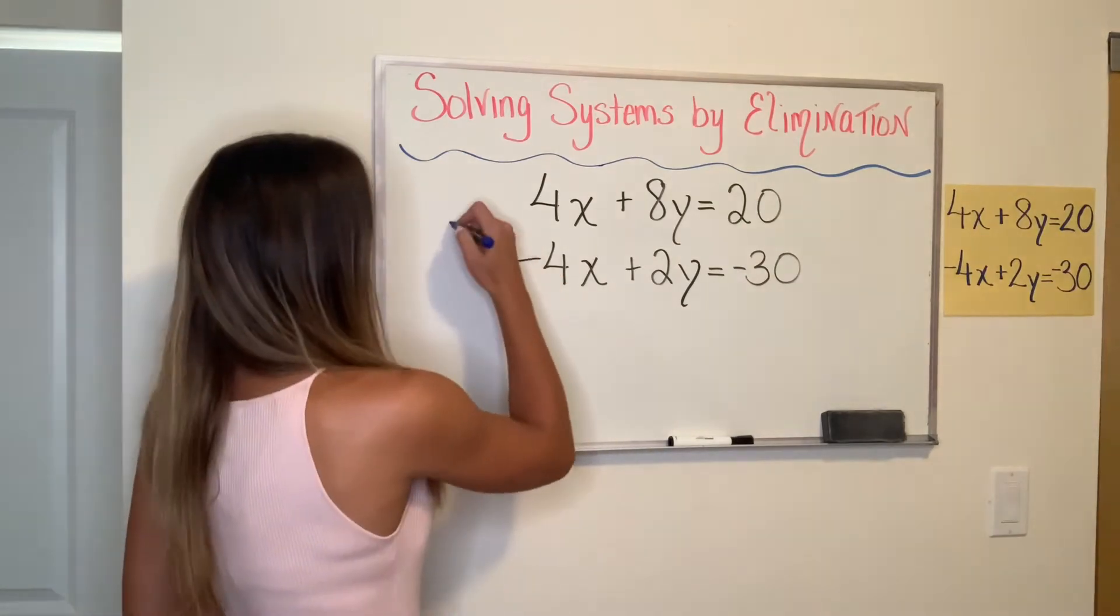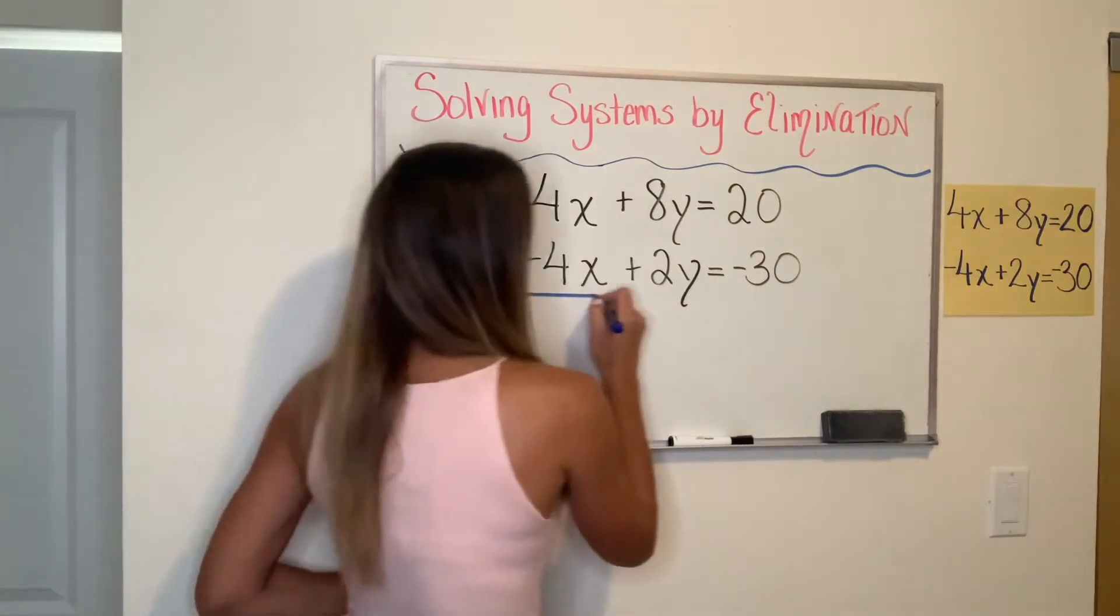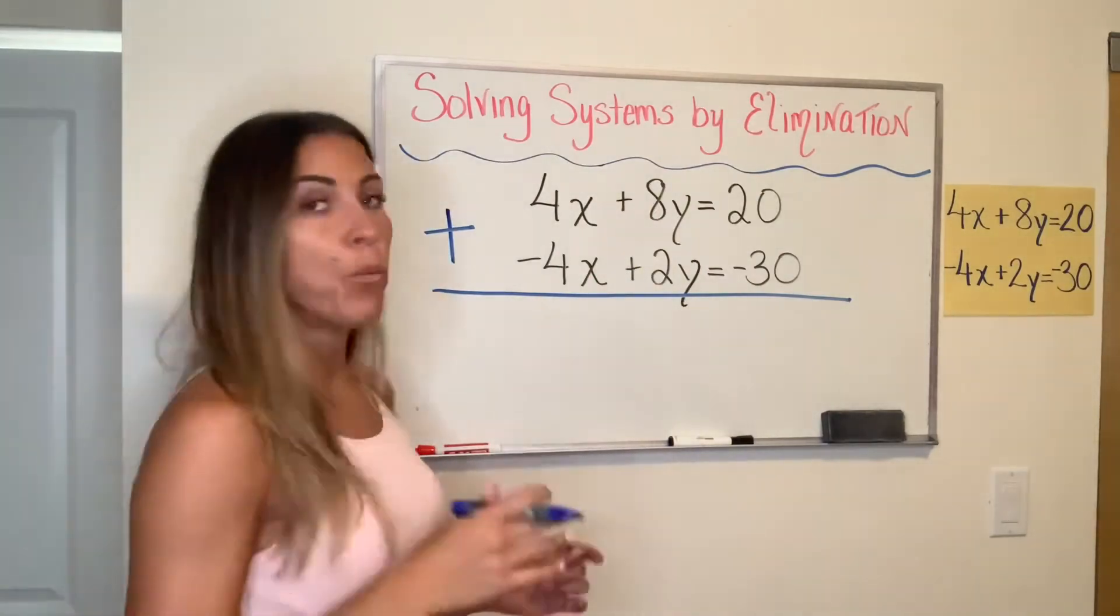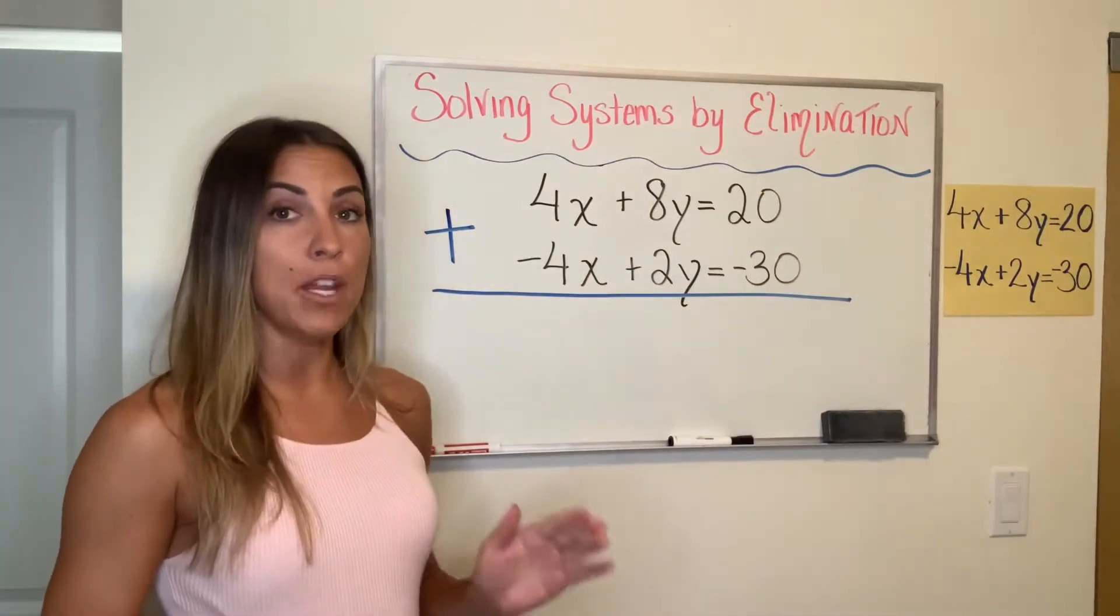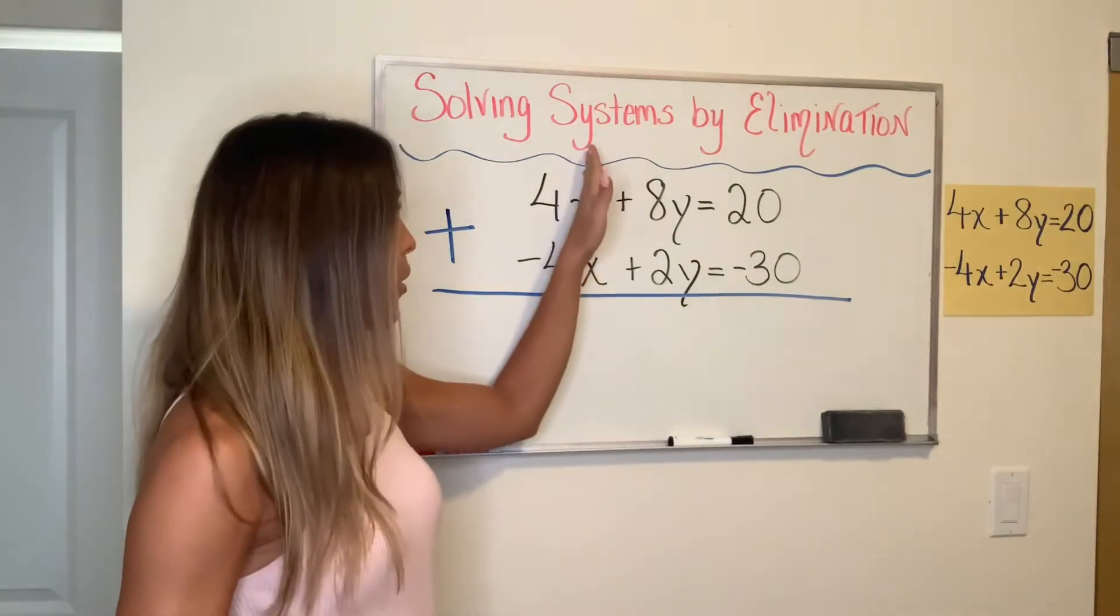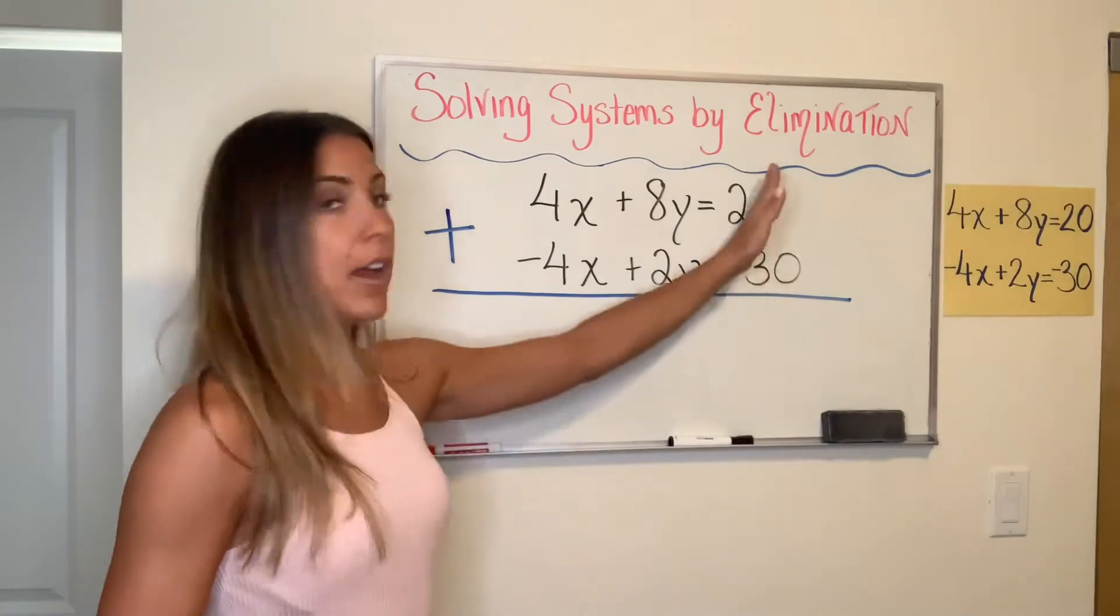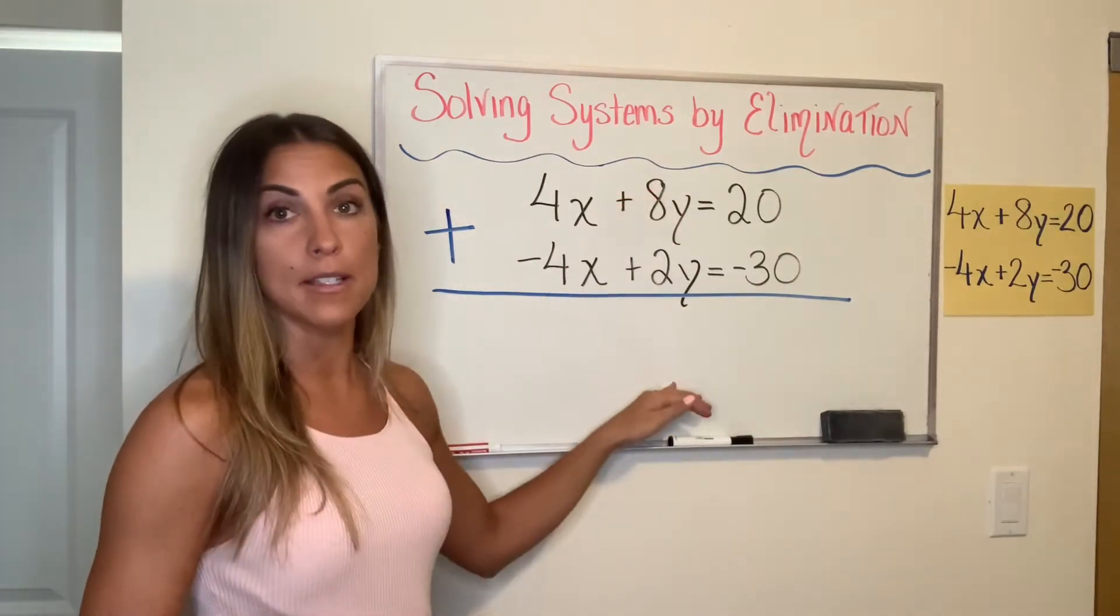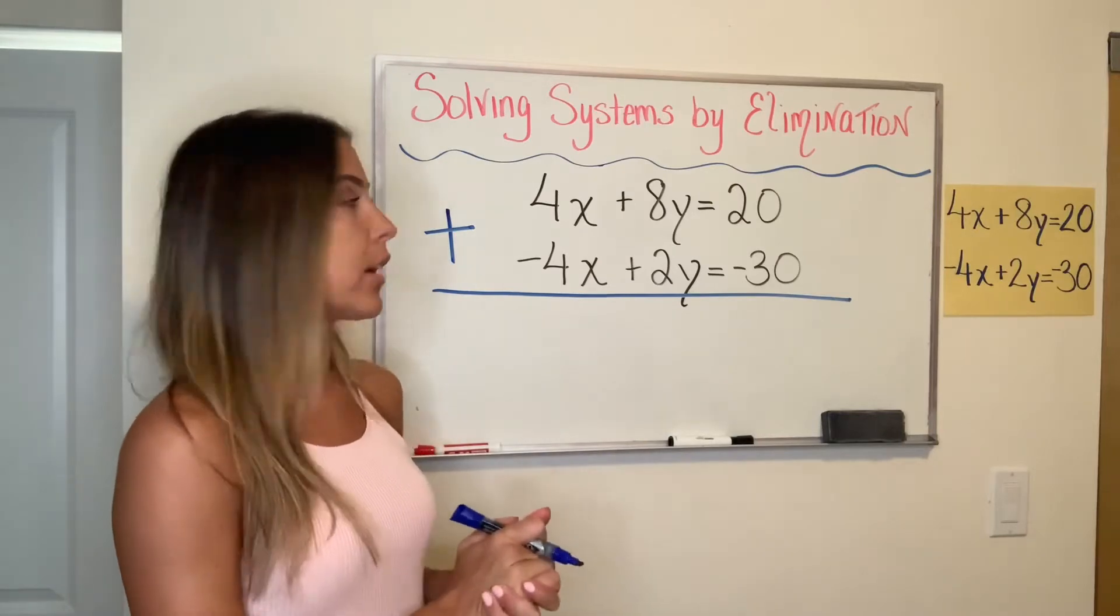So I'm going to add these two equations together, every term with its like term right below it. And one thing that's important before you start is make sure that your equations are lined up in the same exact way. So you see how my equations are X, Y, equal sign, constant. It doesn't have to be that order, but it has to be the same order on the top as it is the bottom to make it easier for you to add correctly.